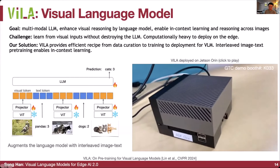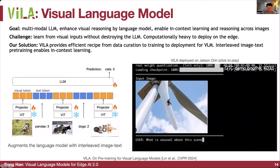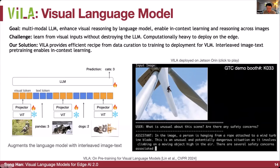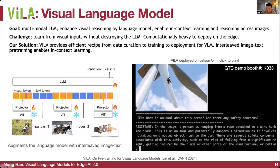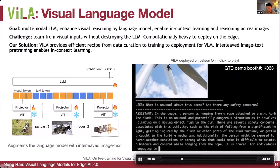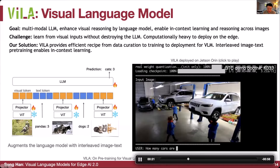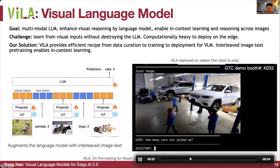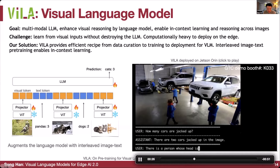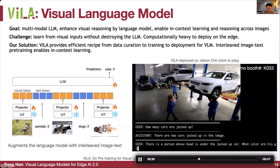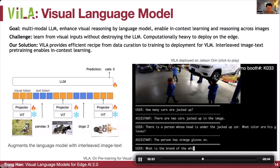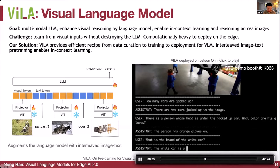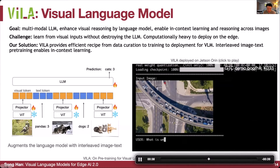We can deploy VILA on a Jetson Orin. Given an image, we can ask about any safety concerns — it can identify a person hanging from a rope and several safety risks such as the risk of falling. In a factory scenario, it can answer how many cars are jacked up — two cars are jacked up — and identify a person whose head is under the car. It can identify the color of gloves as orange, and recognize the car model as a Jeep.